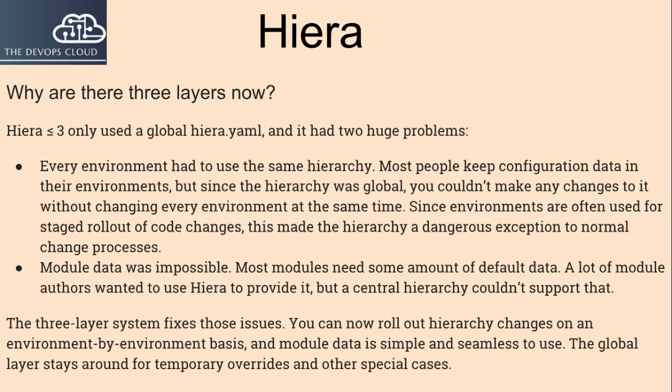Why are there three layers now? Hiera 3 and lower versions only used a global hiera.yaml, and it had two huge problems. First, every environment had to use the same hierarchy. Most people keep configuration data in their environments, but since the hierarchy was global, you couldn't make any changes to it without changing every environment at the same time. Since environments are often used for staged rollout of code changes, this made the hierarchy a dangerous exception to normal change processes. Second, module data was impossible — most modules need some default data, and many module authors wanted to use Hiera to provide it, but a central hierarchy couldn't support that. The three-layer system fixes those issues: you can now roll out hierarchy changes on an environment-by-environment basis, module data is simple and seamless to use, and the global layer stays around for temporary overrides and special cases.